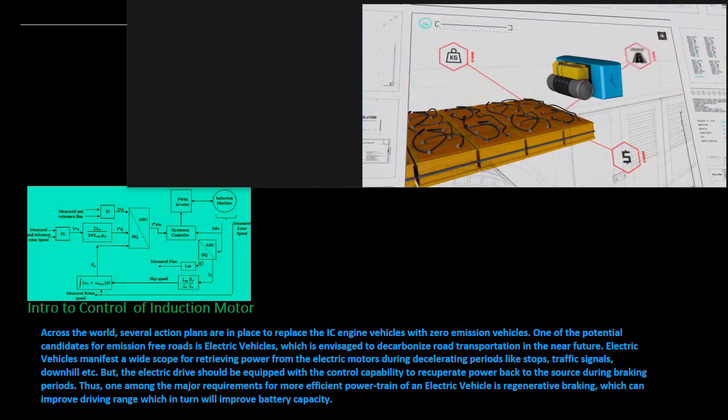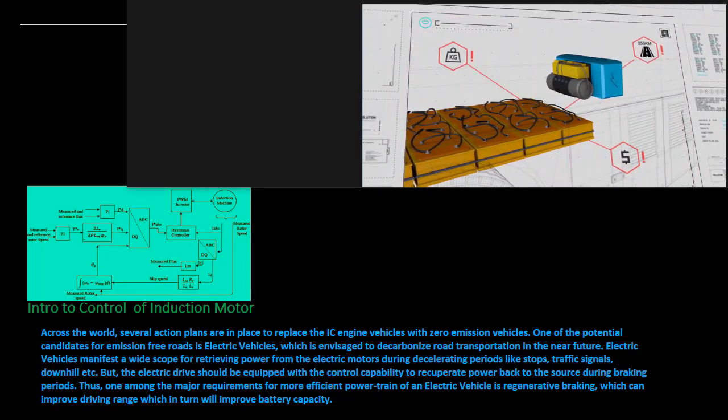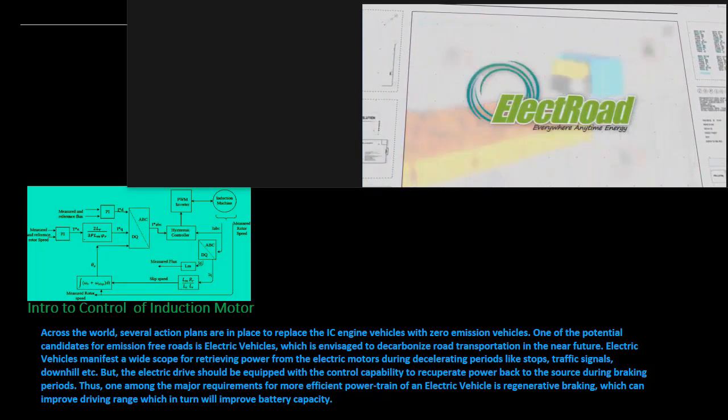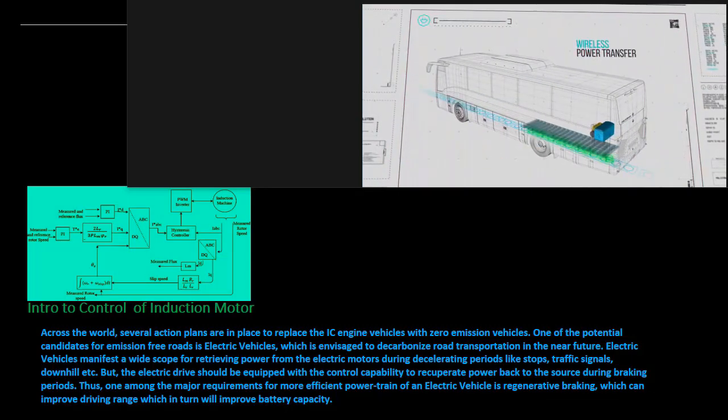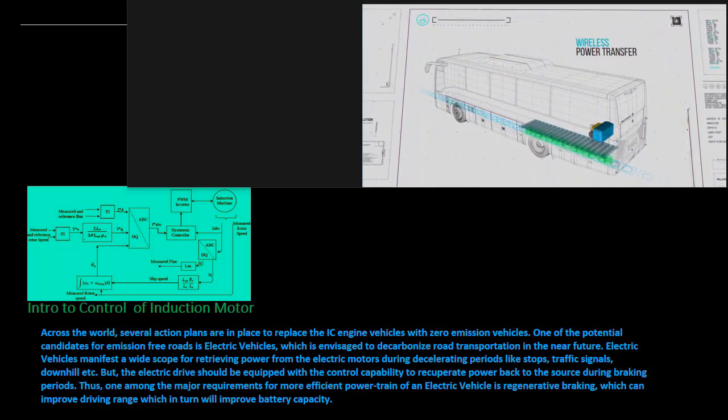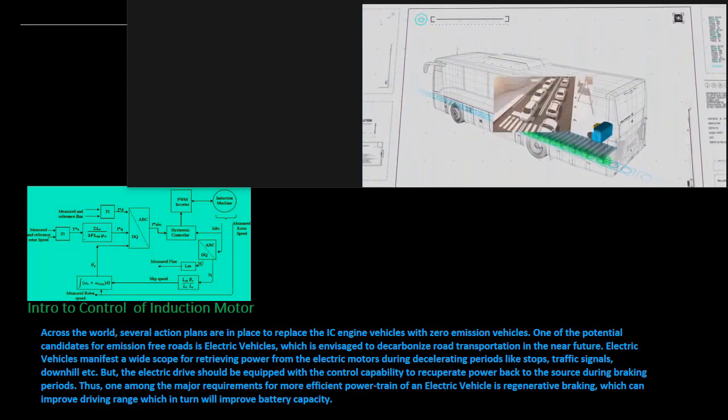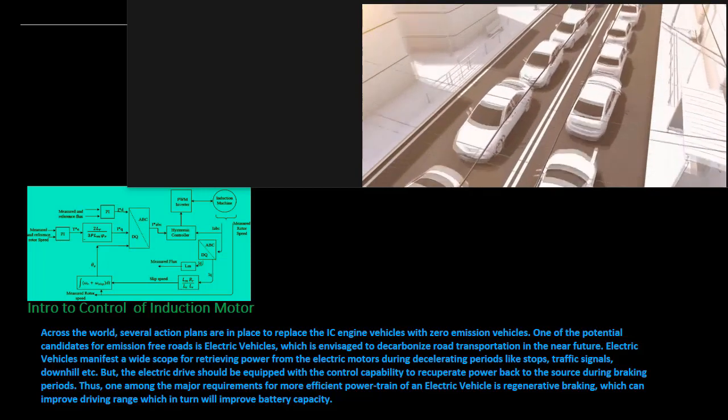Thus, one among the major requirements for more efficient power train of an electric vehicle is regenerative braking, which can improve driving range which in turn will improve battery capacity. However, regeneration can be executed in electric vehicles just through software modifications in the controller without the need of any additional power electronic components.